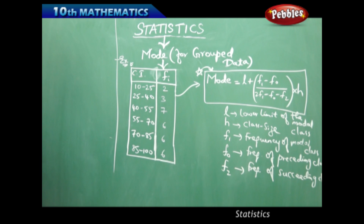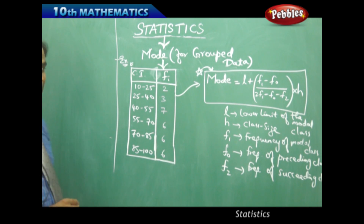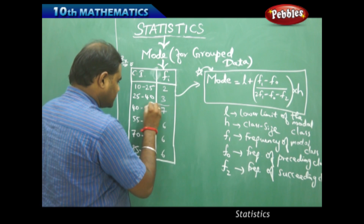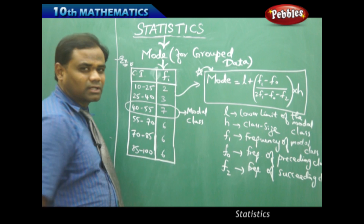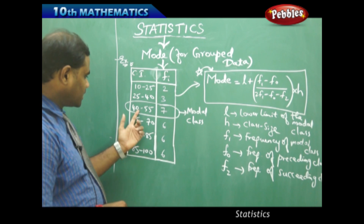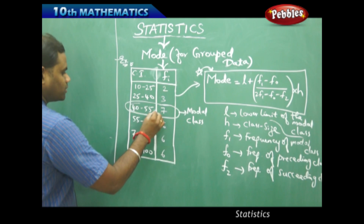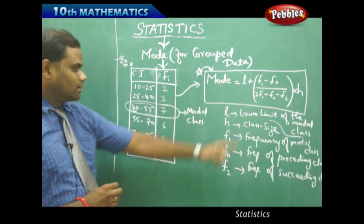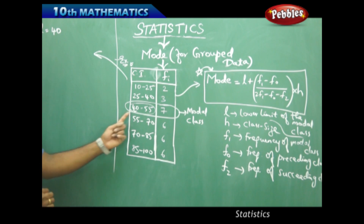To apply the formula, we first identify the modal class — the class with the highest frequency. Since the highest frequency belongs to the class 40 to 55, that is the modal class. Therefore, L, the lower limit of the modal class, is 40. H, the class size, is clearly 15.